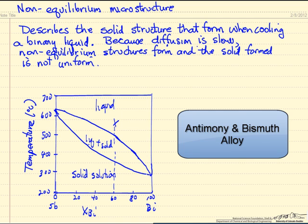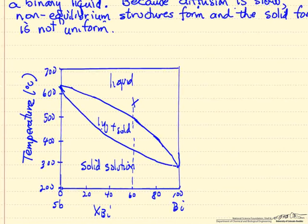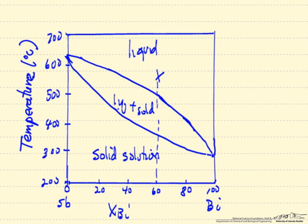This has a significant effect on the subsequent properties of the solid that forms, so it's important to understand these differences. We're looking at the same phase diagram described in another video. High temperature, we have a liquid. Low temperature, a solid solution. This is the mole fraction of bismuth.